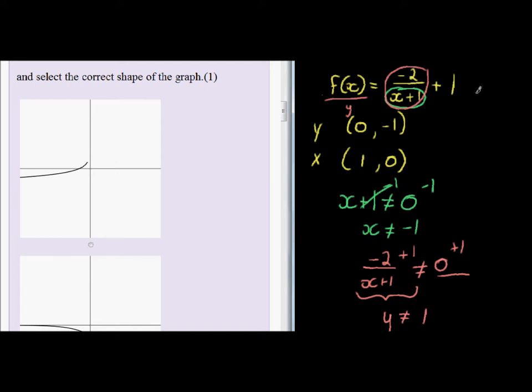A hyperbola either looks like this, or it looks like this, where it tends to its asymptotes here in the center.